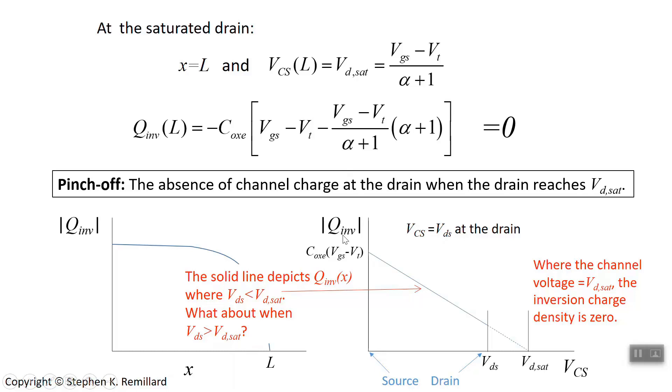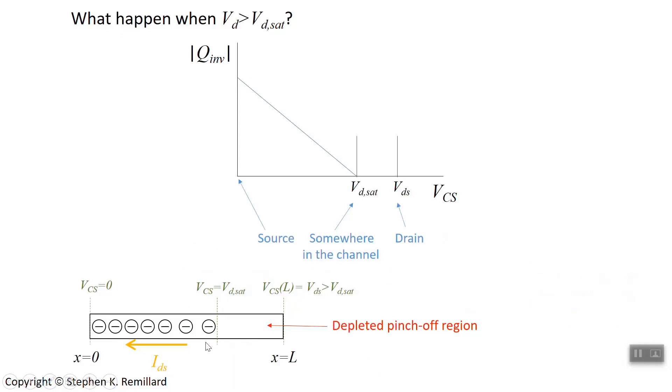So what does the charge distribution inside the channel look like when the drain voltage is larger than the saturation voltage? We have the inversion charge density versus channel source voltage. When that channel source voltage gets to Vdsat, it goes to zero. We've already demonstrated Q inversion goes to zero at that point. And so there's no charge in the channel beyond that point. So as you go all the way to the drain, you have no actual charge distribution to talk about. Somewhere in the channel, it stops.